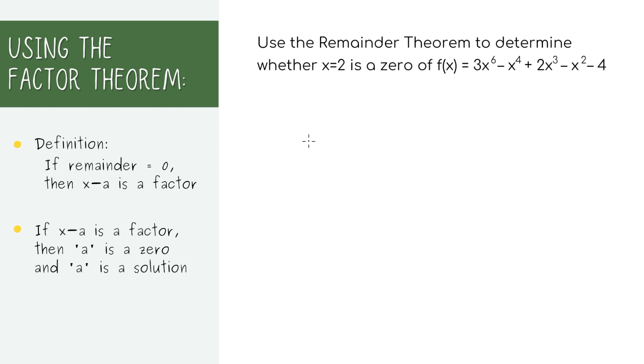Our final example is this problem that asks you to use the remainder theorem or factor theorem to determine whether x minus 2 is a zero of this polynomial. If x equals 2 is a zero, then you know that x minus 2 is a factor. And continuing with the logic, if it is a factor, then the remainder should equal zero.